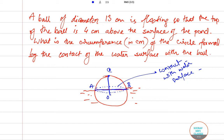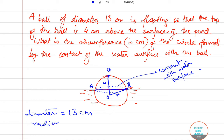We join O to B and O to C. OB is the distance from the outer surface to the center, so this is the radius of the ball. OC is also the distance from the center to point C on the outer surface, so OC is also equal to R. Since the diameter is 13 centimeters, the radius R equals 13 divided by 2, which is 6.5 centimeters.